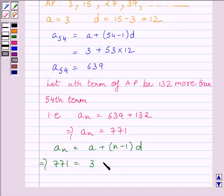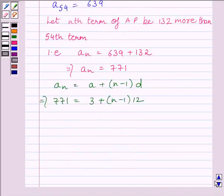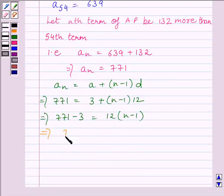Simplifying, we get 771 minus 3 is equal to 12 multiplied by (n-1). This implies 768 is equal to 12 multiplied by (n-1).